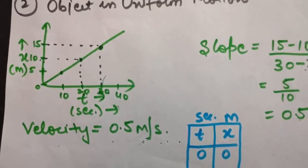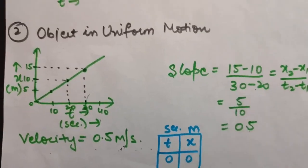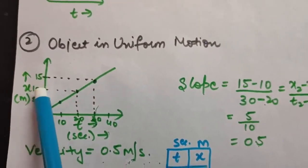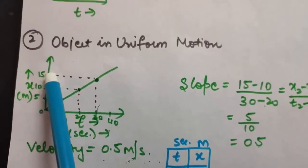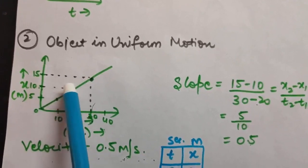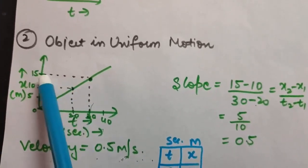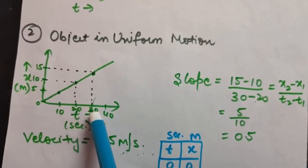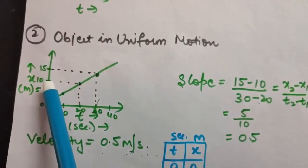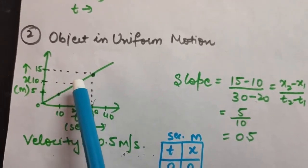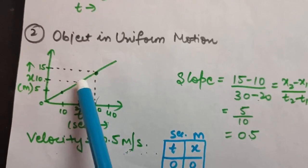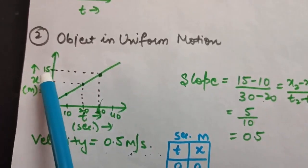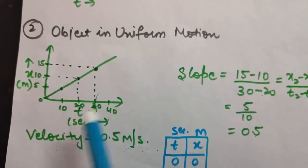To calculate slope, choose any two points on the graph. Draw a line parallel to the x-axis from one point until it meets the graph line, then draw a line parallel to the y-axis, forming a triangle. The slope is tangent theta, which equals perpendicular divided by base, that is AB divided by BC.